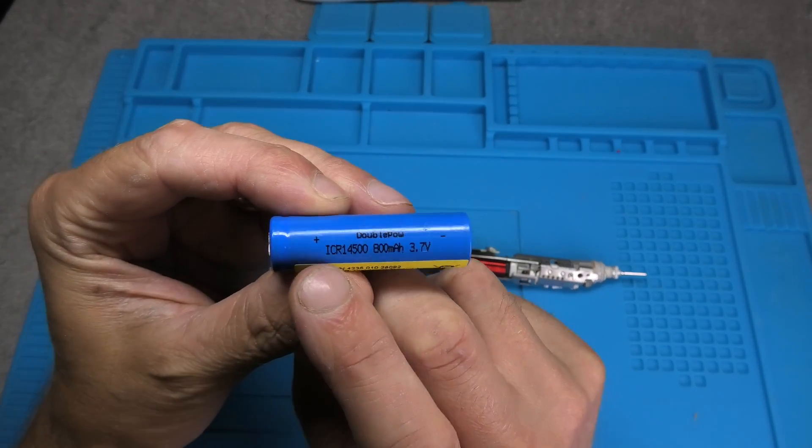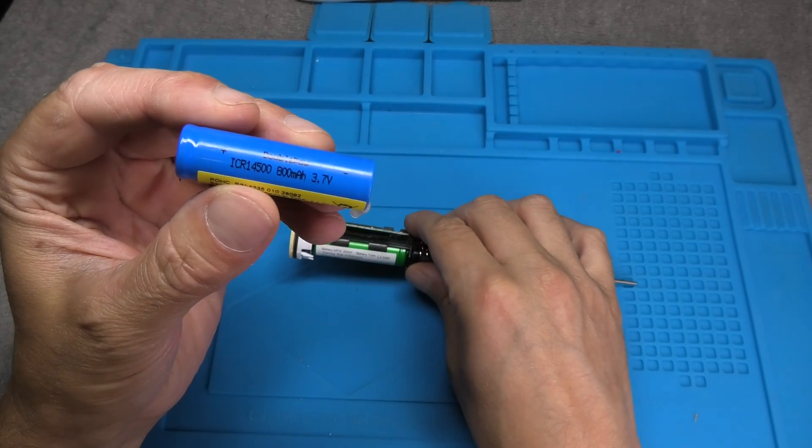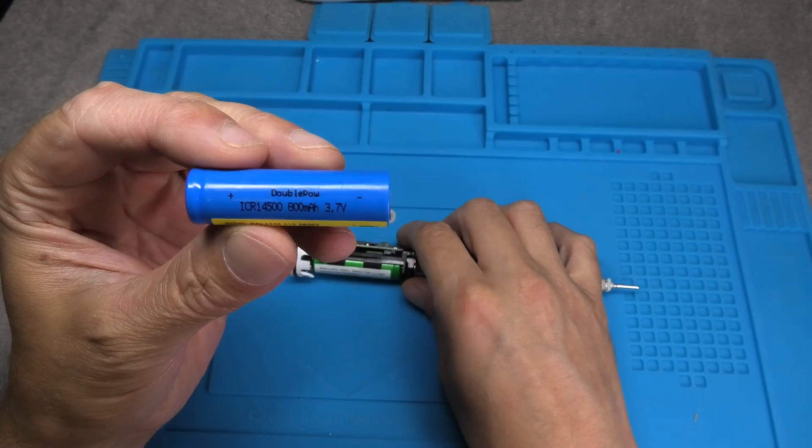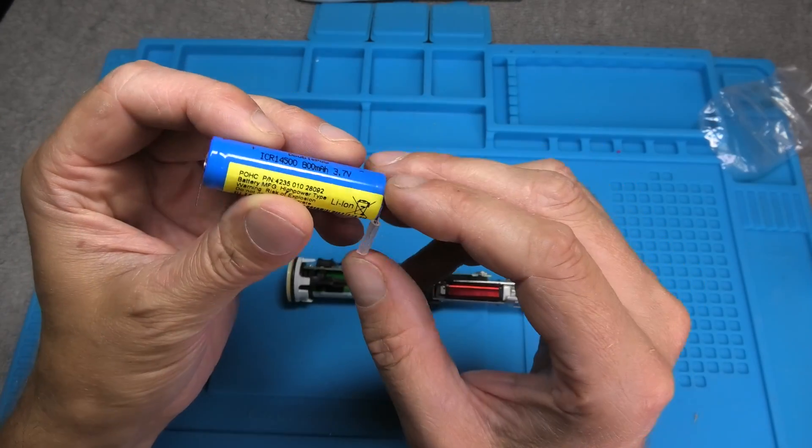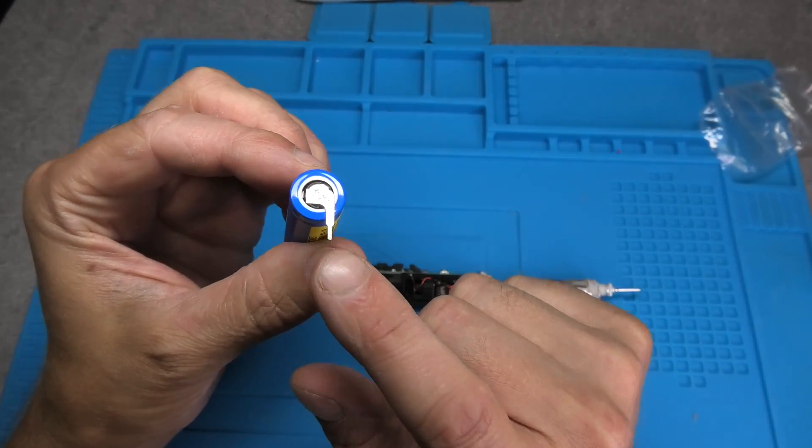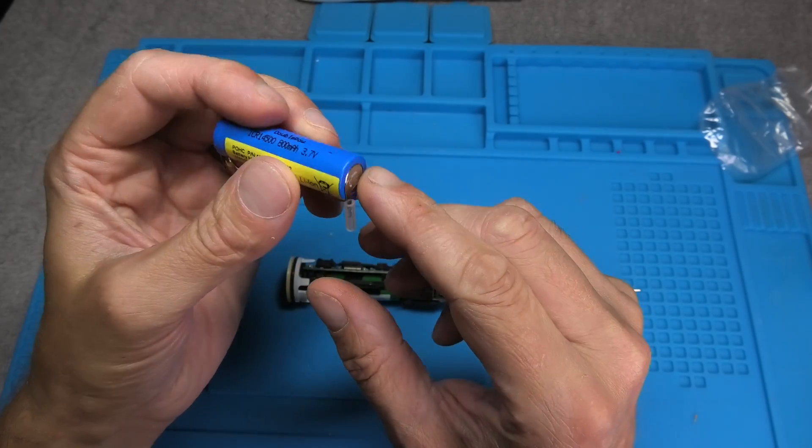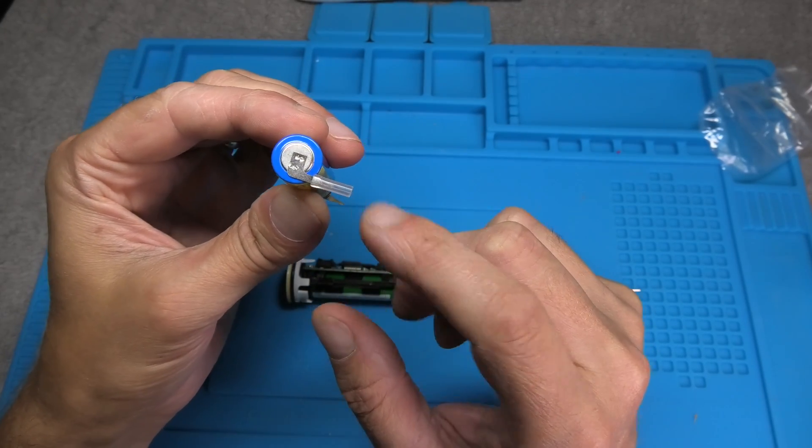I'm going to post the link to this battery in the comment section below. You see here the type that I am using now is the ICR 14500 and this comes with 3.7 volts.